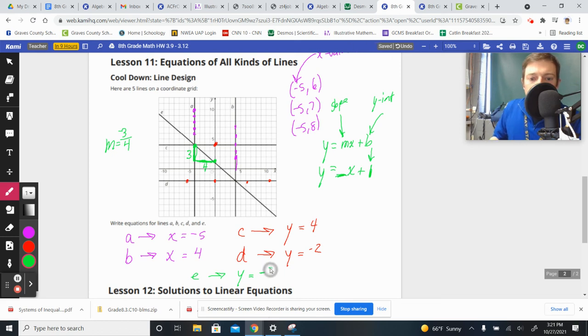So I know that my slope is negative 3 quarters X, and then I add my 1 for my Y intercept. And there's my equation for E. Y is negative 3 quarters X plus 1. And that is your homework help for Lesson 11. We'll see you guys tomorrow.